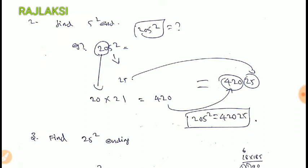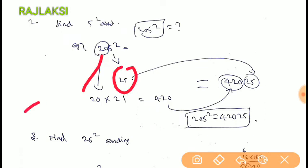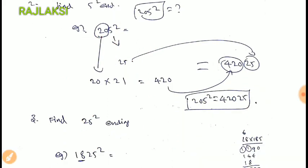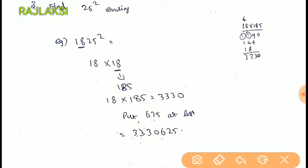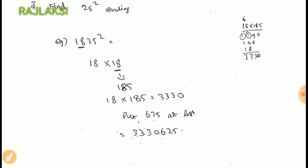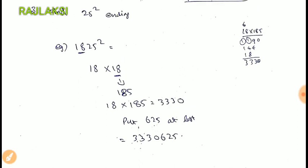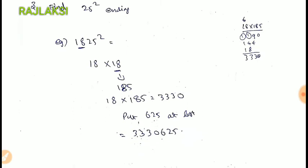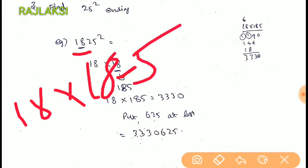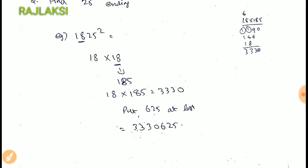Now we have 205 square. If we have the last digit 5, it is 25 square. The value is 420, so it is 42025. If it is 25 square, it is easier — 625. So the last number: the first number is 18, that is why you square it. If you have 18, you can add 5: 18 becomes 185. So you can add 625.